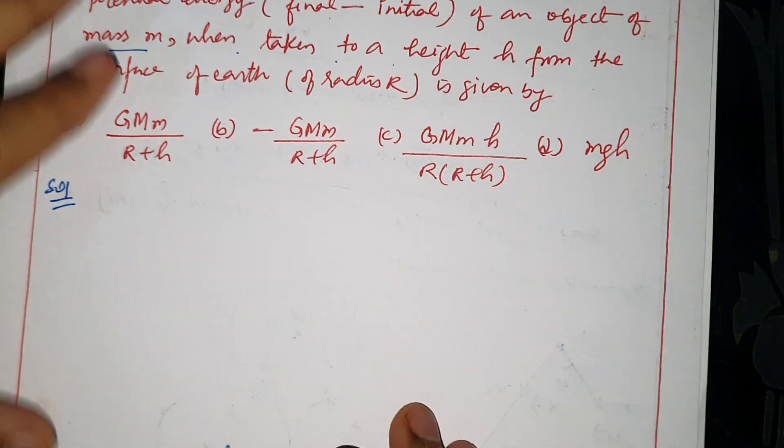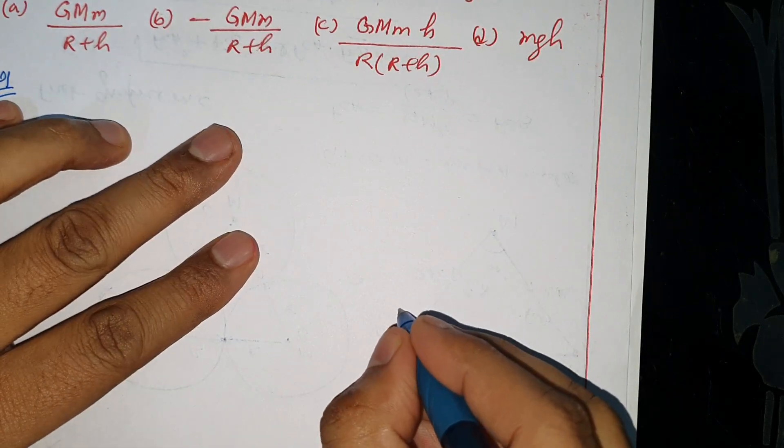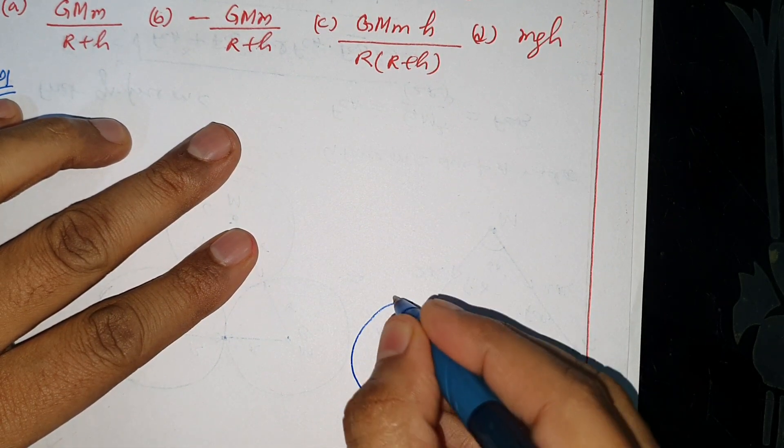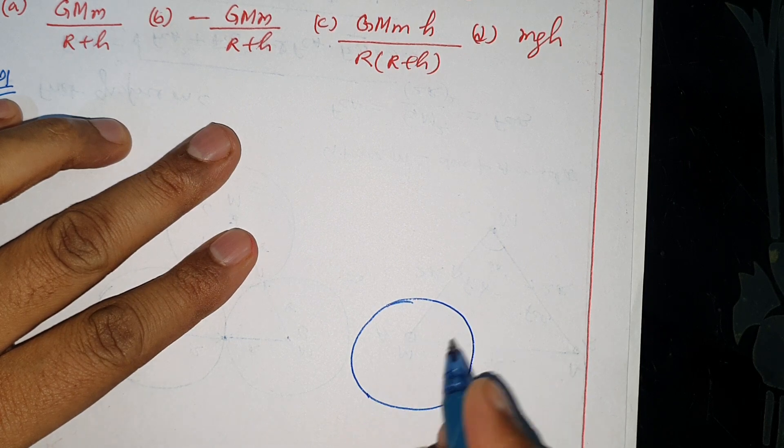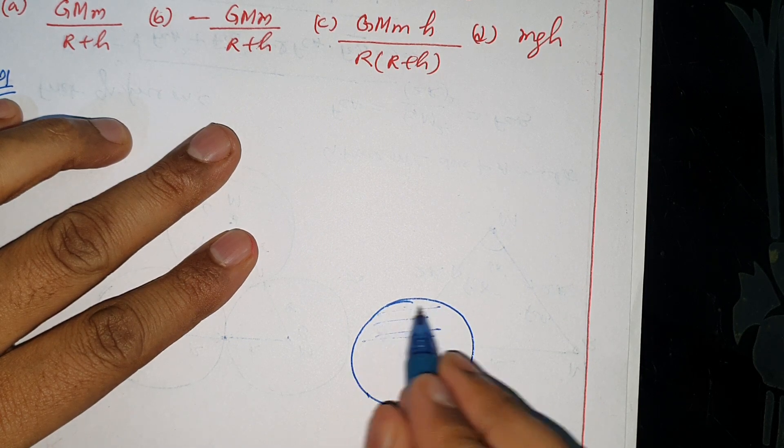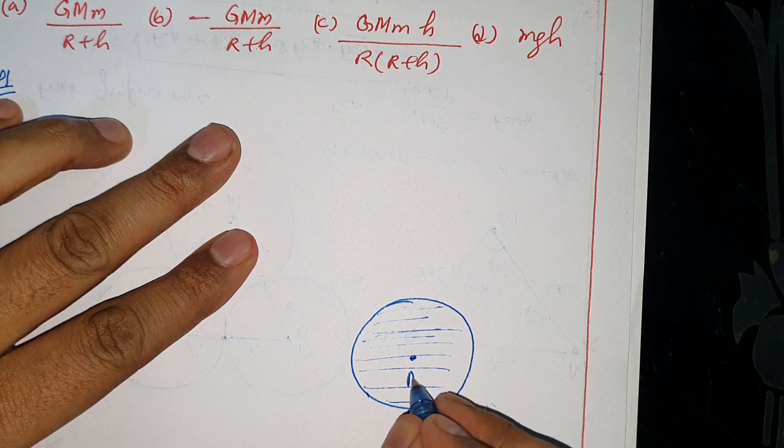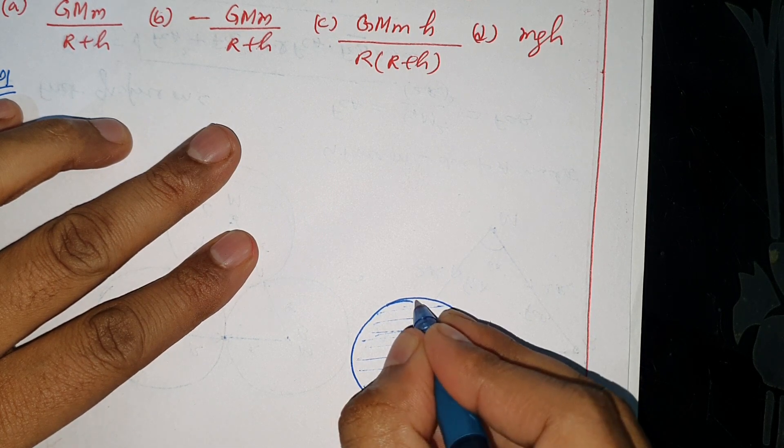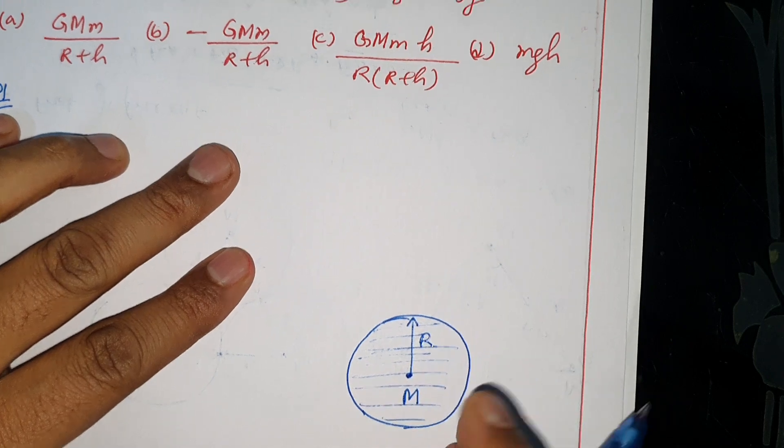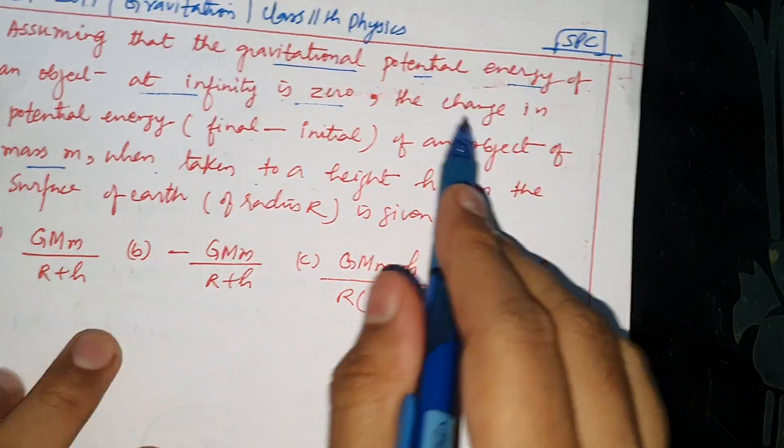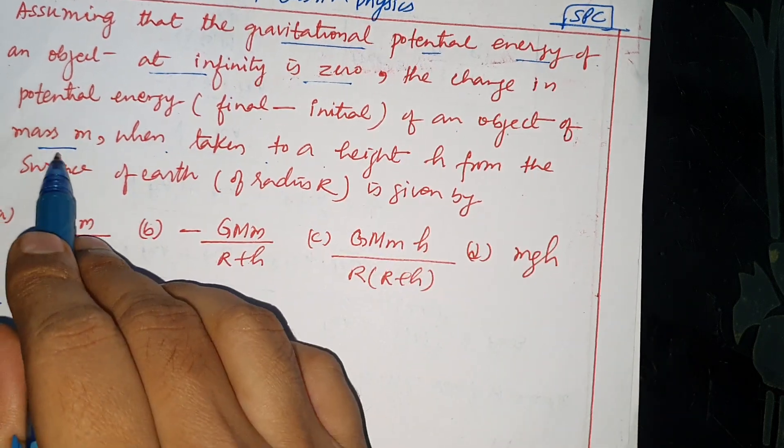Solution: In the diagram, I've drawn Earth. This is Earth with mass capital M and Earth's radius capital R. Now I'll take an object of mass small m.